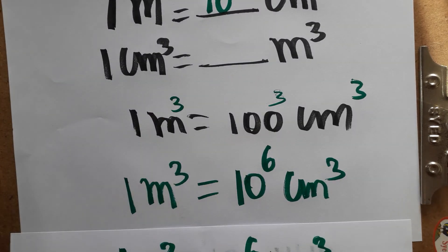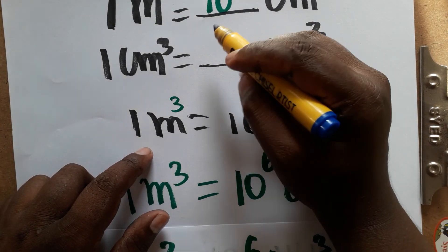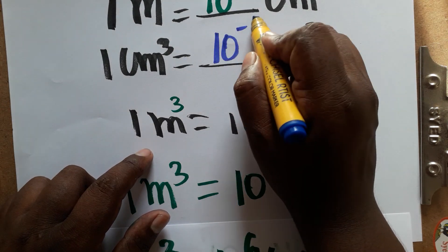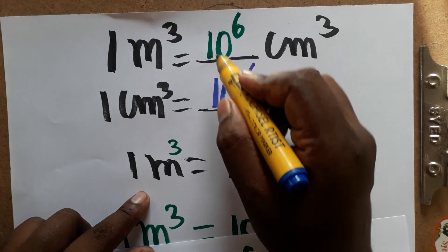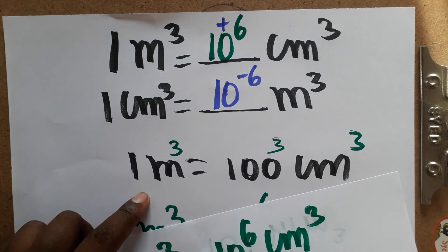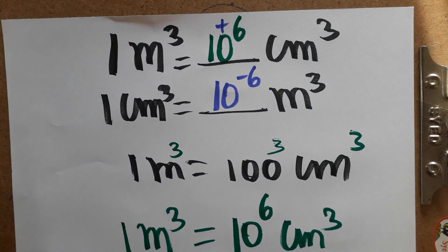To summarize: 1 centimeter cube is 10 power minus 6 meter cube, and 1 meter cube is 10 power plus 6 centimeter cube. Thank you for watching — please subscribe.